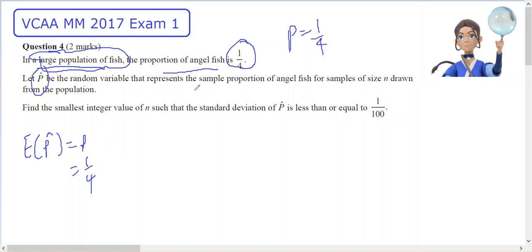P-hat is the random sample proportion. I don't know n; therefore, p-hat will be binomial. I don't know n, but p is going to be one quarter.